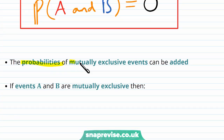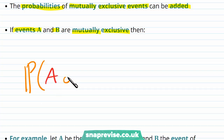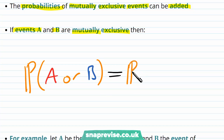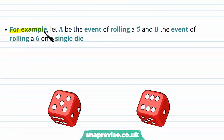The probabilities of Mutually Exclusive Events can be added. If Events A and B are Mutually Exclusive, then the probability of Event A or Event B occurring is equal to the probability of Event A plus the probability of Event B. For example, let A be the event of rolling a 5 and B be the event of rolling a 6 on a single die.